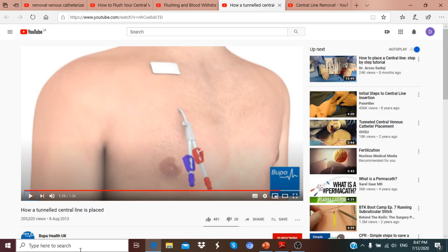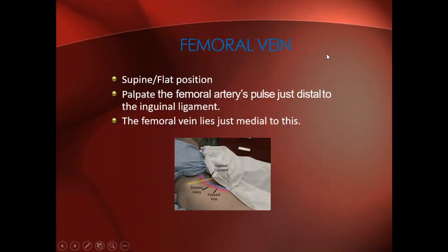Another insertion site for non-tunneled catheters is the femoral vein. The patient is placed in the supine or flat position. Palpate the femoral artery's pulse just distal to the inguinal ligament — that is the location of the femoral vein. The femoral vein lies just medial to the inguinal ligament. You can feel the inguinal ligament and then check the pulse medially to find the femoral vein.